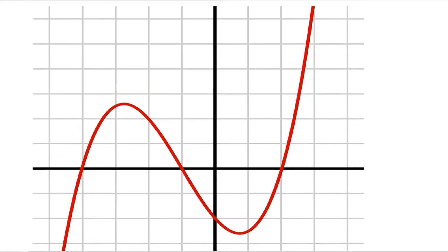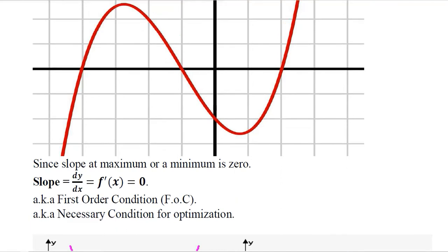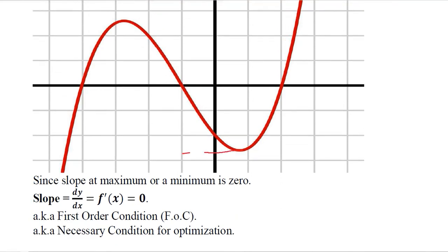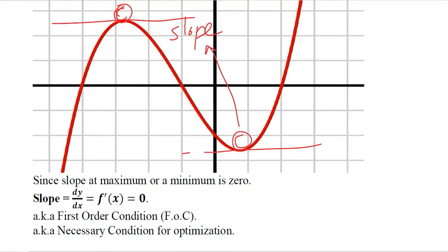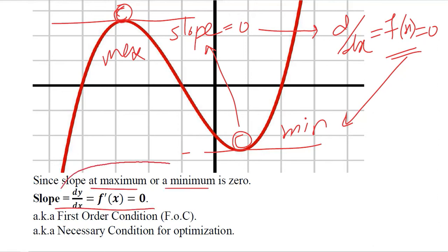This is a graph we have plotted. It has two wiggles — it looks like a cubic function. After plotting this, we can guess that the derivative will be zero at the minimum as well as at the maximum. If I place a ball at the minimum, it is not going to move, so the slope is zero at that point. Similarly, if I place a ball at the maximum, it is again stable — the slope equals zero. So at a maximum or minimum, the slope is zero.